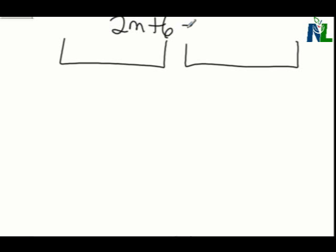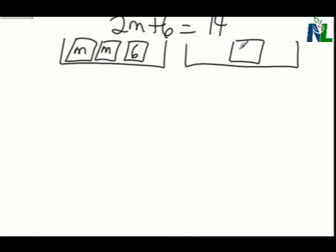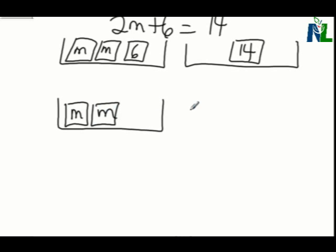We'll do one more now. This one's going to be a little bit harder. We're going to do 2m plus 6 equals 14. So we need 2m weights. We don't know how much they weigh yet. And we have a 6 weight on the left pan. And that is balanced or equal to 14. Now, we want to isolate the variables. So we want the m's in the left pan all by themselves. So what we're going to have to do is we're going to have to take out that 6.